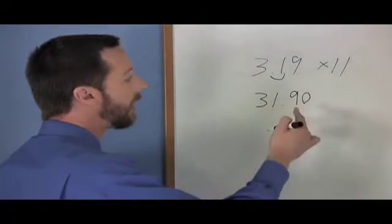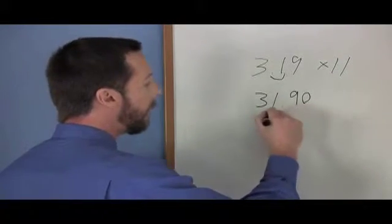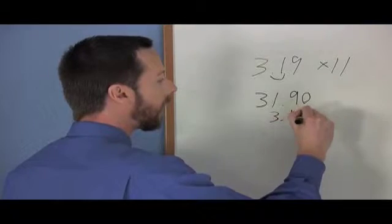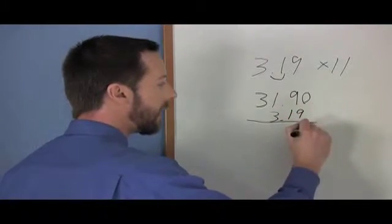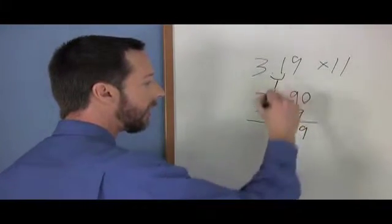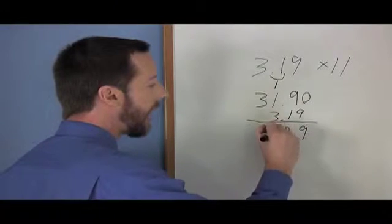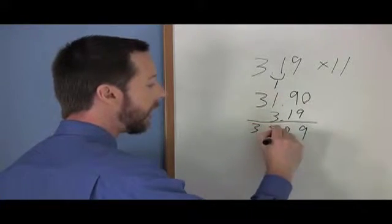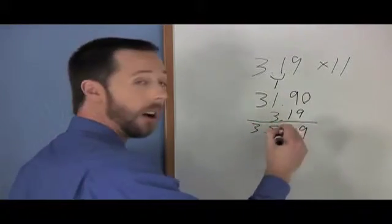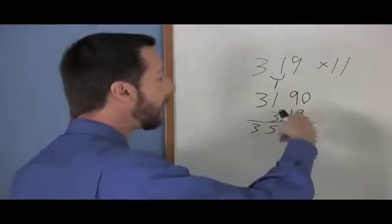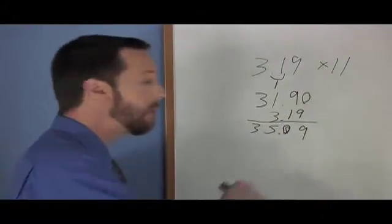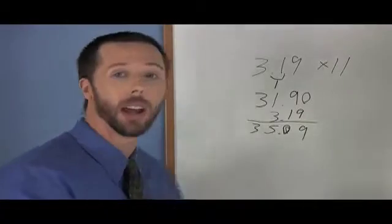So when we add $3.19 to this, we get nine, zero, carry our one, we get five here and we get three here. So $35.09 is what we get when we added our additional one back in. And you might be able to add this in your head.